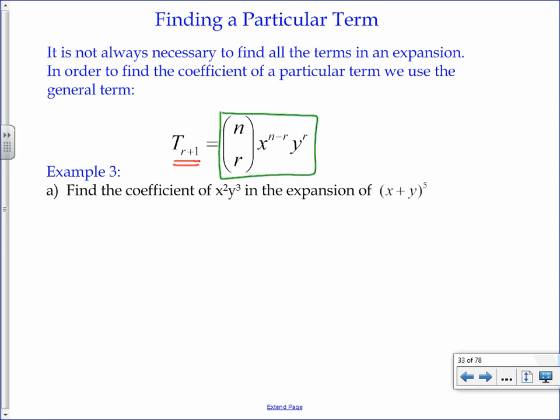In other words, in order to get the fourth term in the expansion, we would have to set r equals 3. So we're going to have a look at using this general term, particular term formula.